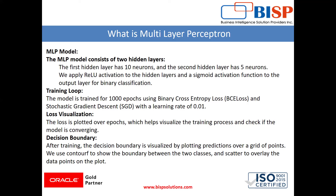First, the training loop: the model is trained for 1000 epochs — as we discussed earlier, epochs means repetitions — using binary cross-entropy loss and stochastic gradient descent with a learning rate of 0.01. Second is loss visualization: the loss is plotted over epochs, which helps visualize the training process and check if the model is converging.